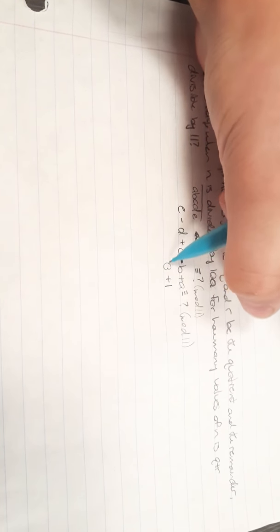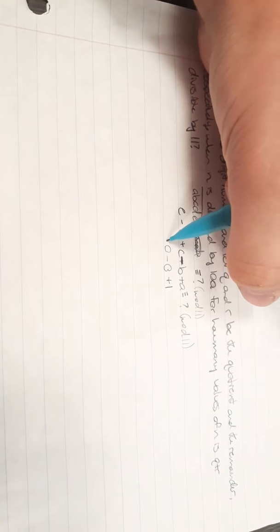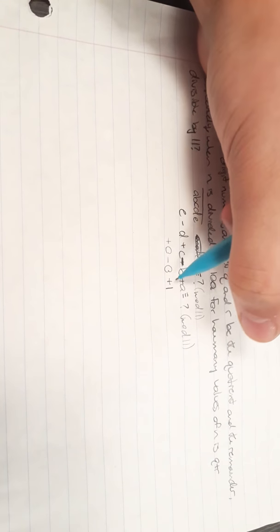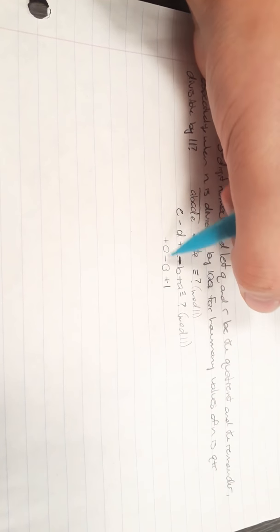To find the smallest number, we're going to want a to be 1, b to be 0, 0. Now in total we're going to have to have it equal 0 mod 11, so I'm thinking if we do a 9 over here, that should work.